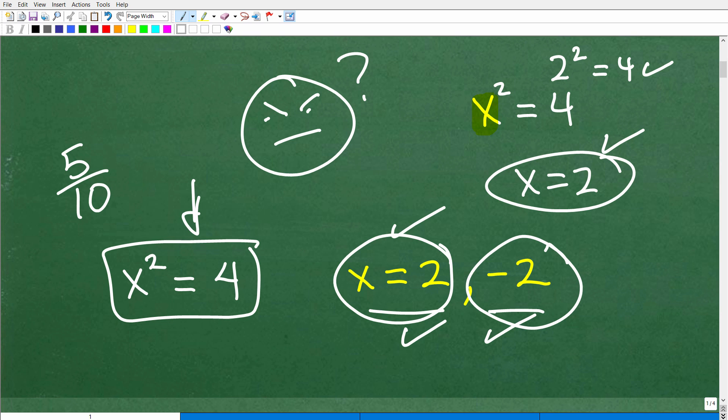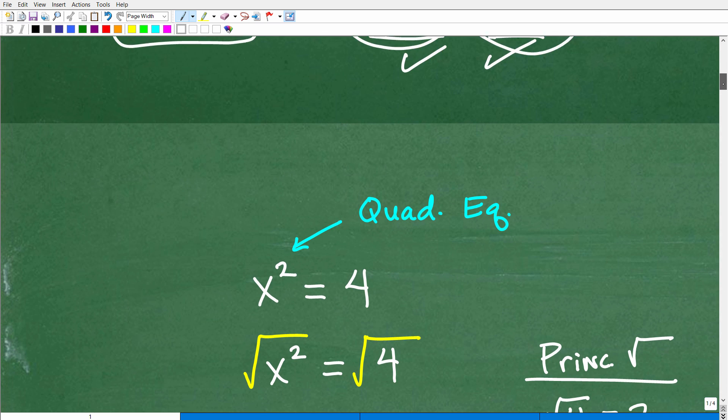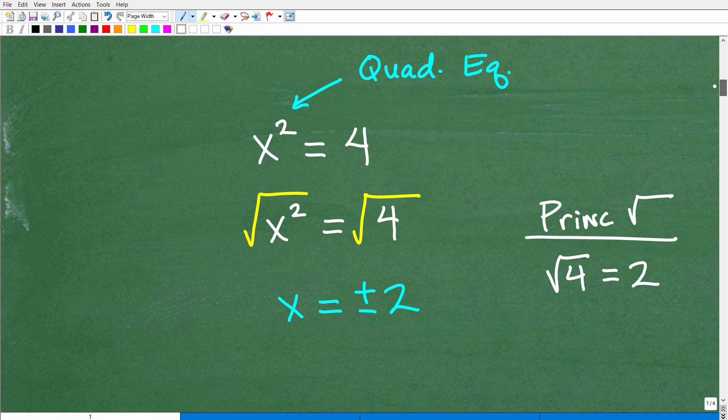We need both of these solutions. So anyways, let's go ahead and get into why this is. All right, so this is the bigger point here, okay? We have x squared is equal to four.